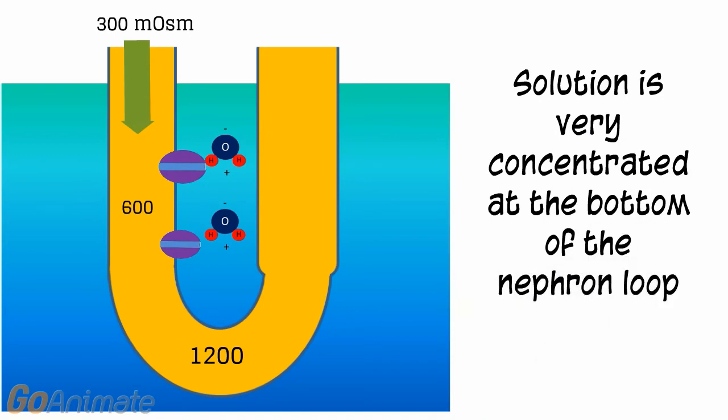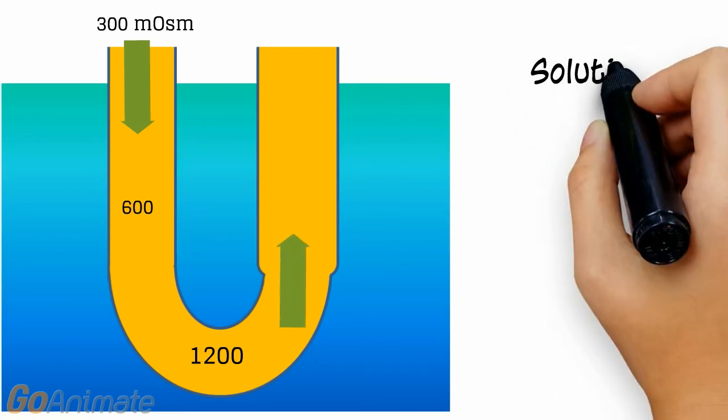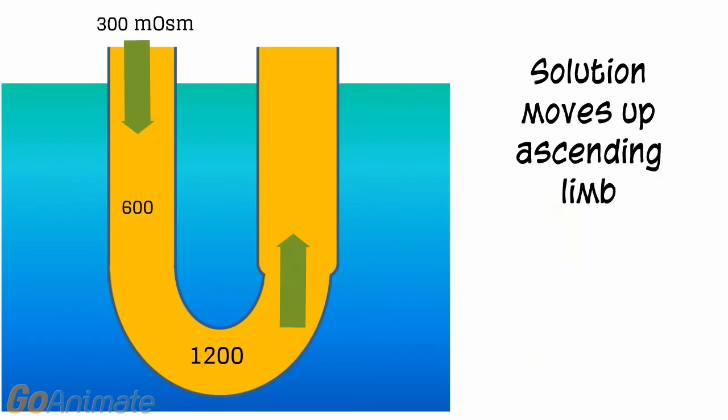The solution at the bottom of the Nephron Loop is very concentrated, up to 1200 milliosmoles. The solution then moves up the ascending limb.